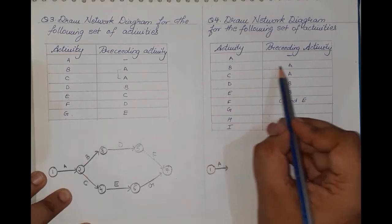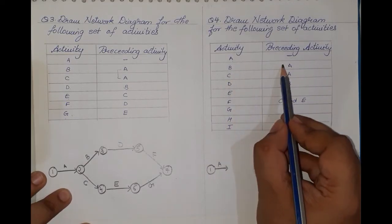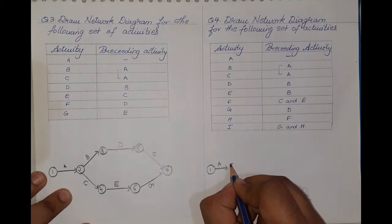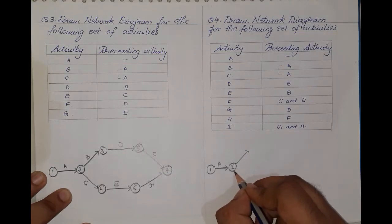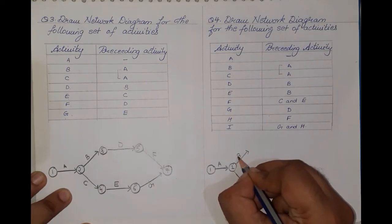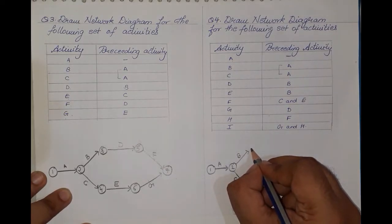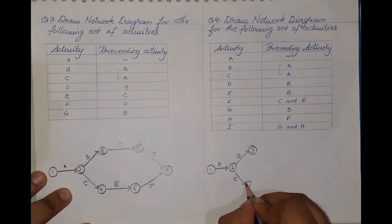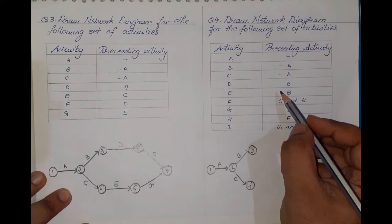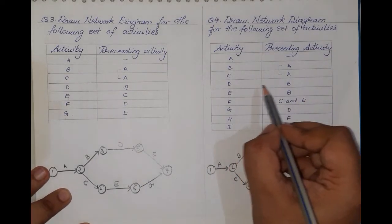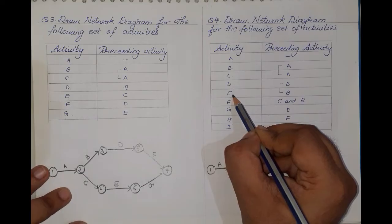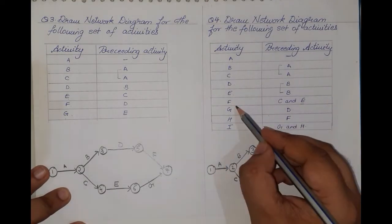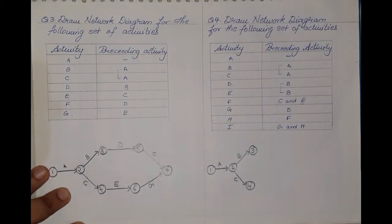From activity A, we can see that activity B and activity C have both evolved, so from activity A we have two activities bursting out — activity B and activity C, which will be event number three and event number four. Going ahead, from activity B, activities D and E have both evolved. Now notice that from E, activity F has also evolved, and from C, activity F has also evolved. So there is a lot of merging and bursting in this case — look at this very carefully.